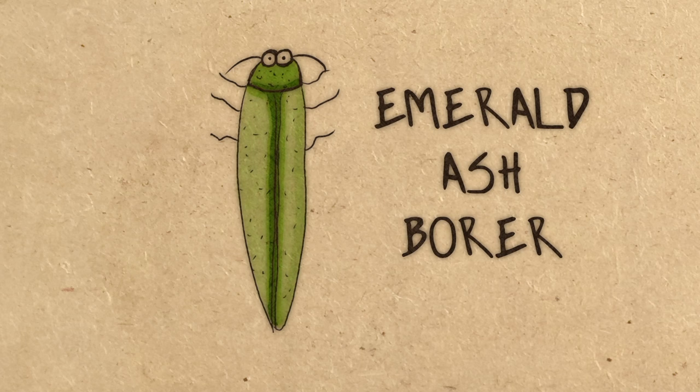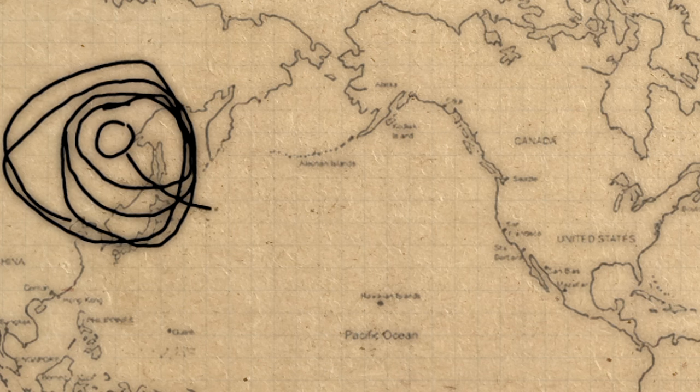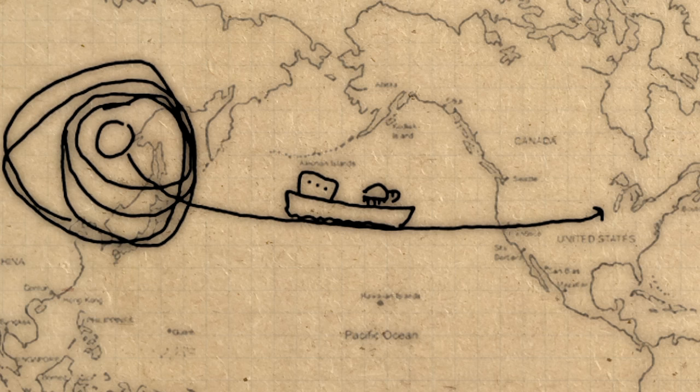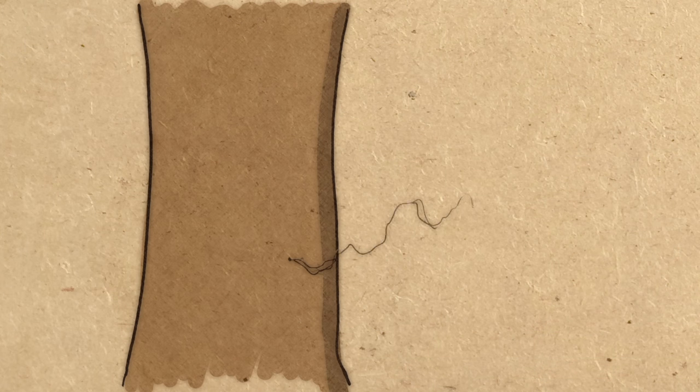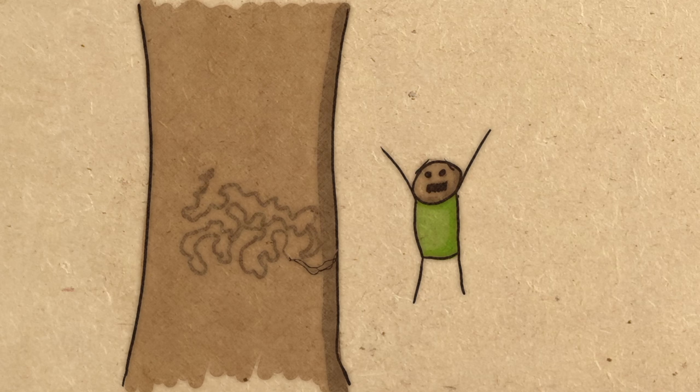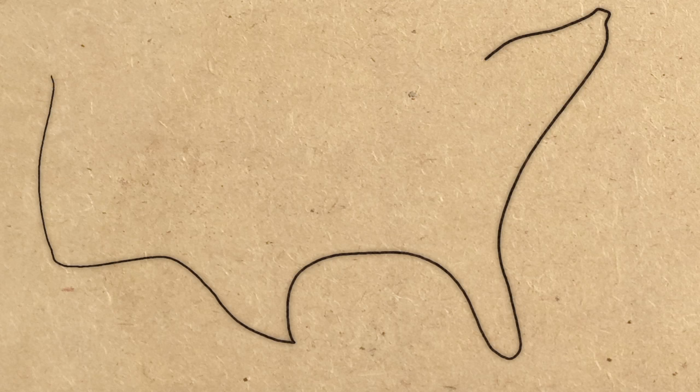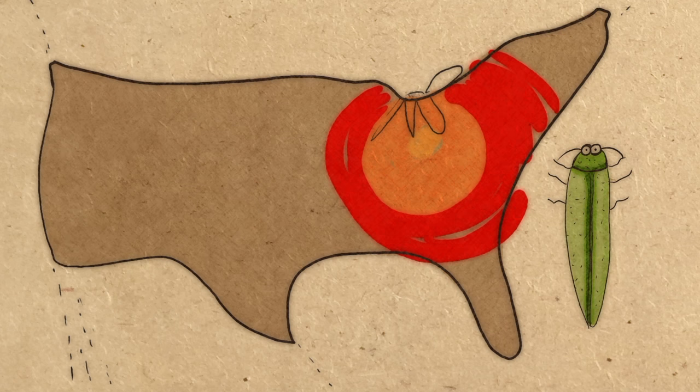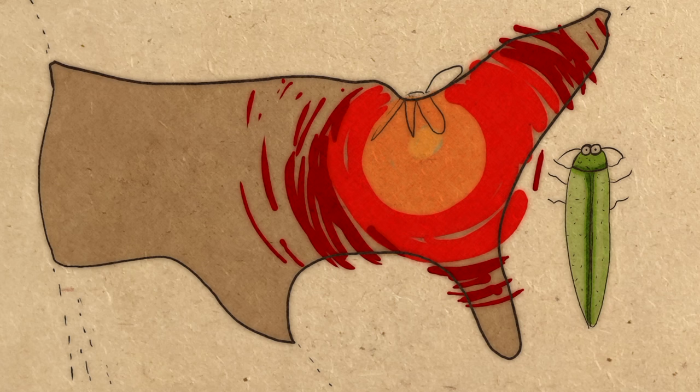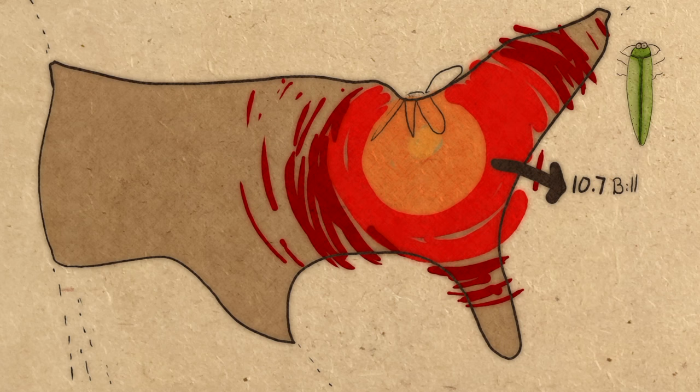The emerald ash borer. They're originally from Asia, came over by accident in cargo in the 1990s. It's a pretty bad bug if you're an ash tree, that is. It bores through the inner bark and kills the tree pretty quickly. And that's bad news if you have a bunch of ash trees on your property. In fact, the ash borer has reached 25 states so far, causing 17 million ash trees to be replaced at an estimated cost of $10.7 billion.